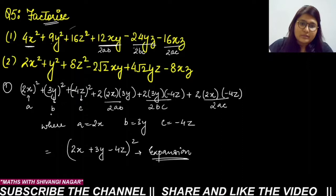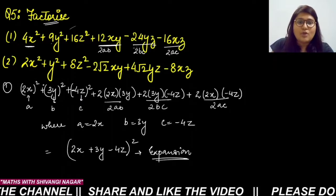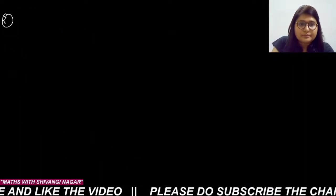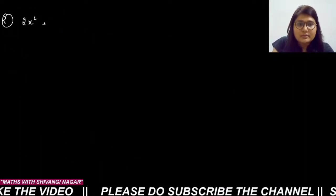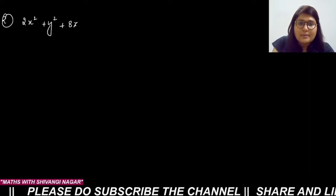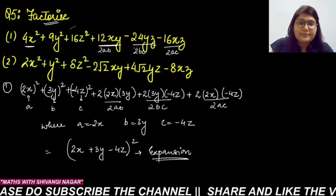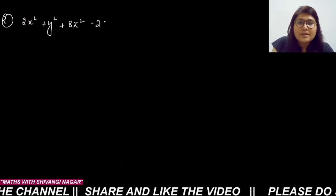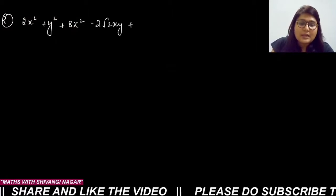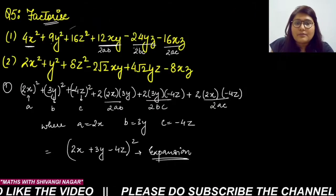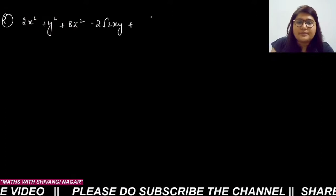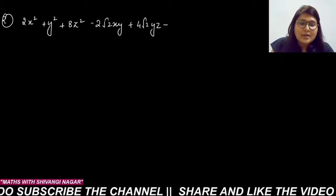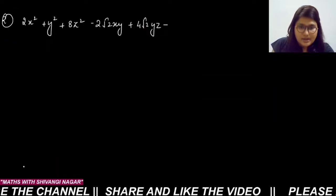Clear. Now the next expression: 2x² + y² + 8z² - 2√2·xy + 4√2·yz - 8xz. Let's analyze this carefully.